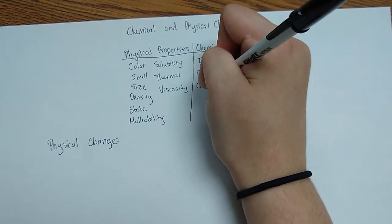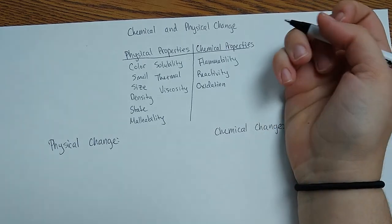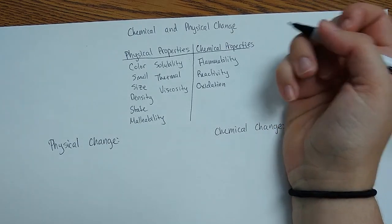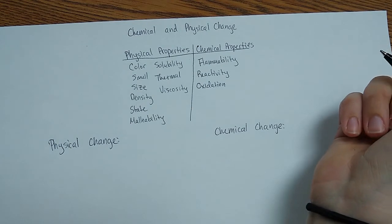Oxidation. This is its ability to react with oxygen. So think about rust. Rust forms when iron reacts with oxygen, and it takes a long time to do that.